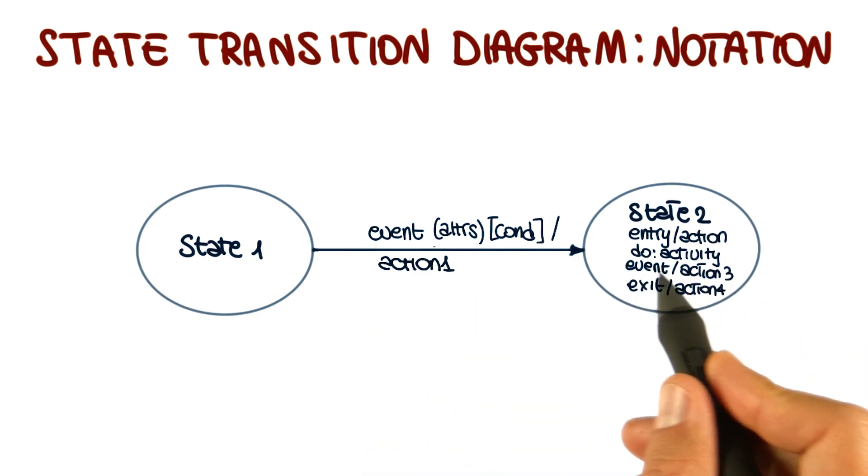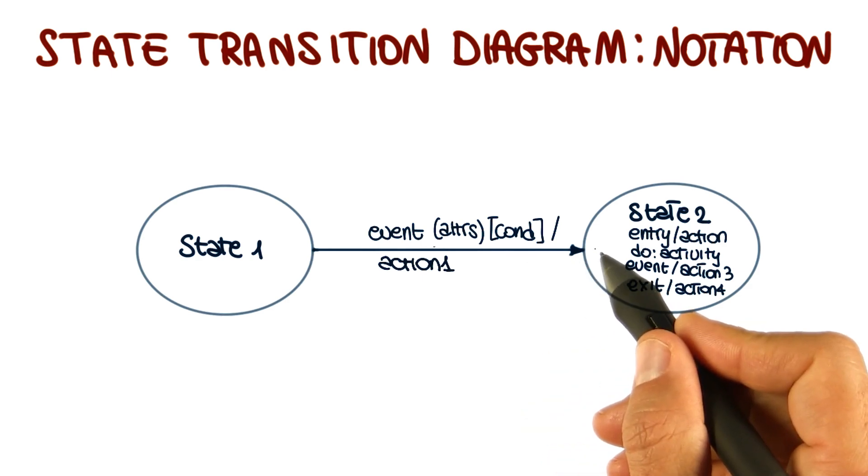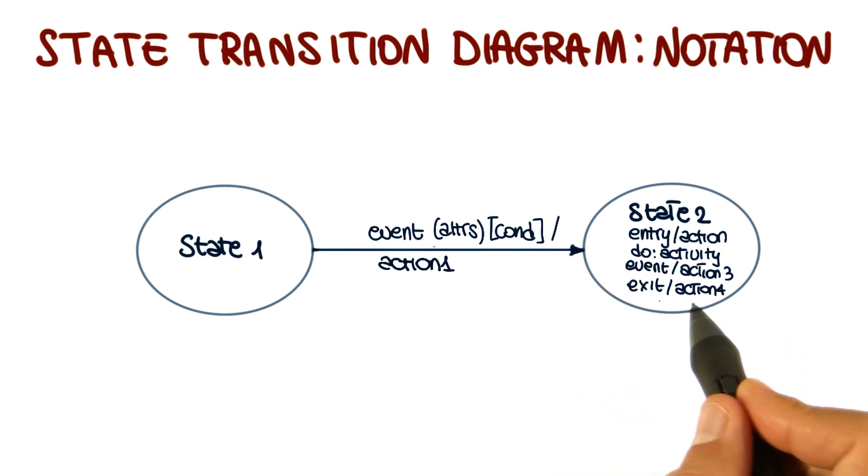Actions, conversely, just like the actions corresponding to an event, are instantaneous operations that are performed by an object, and can be triggered on entry, so when the object reaches a given state, when the object exits that state, and also when a specific event occurs.